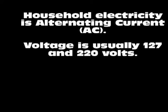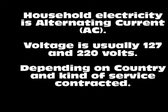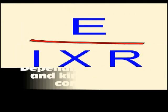The electrical energy coming to our home from the power company is in the form of alternating current. The voltage delivered is generally either 127 volts or 220 volts, or a combination of both, depending on the country and the type of service requested.